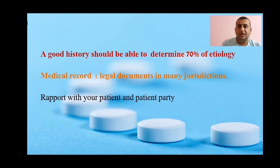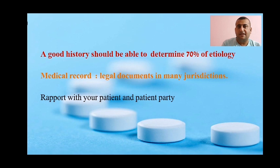If a patient has come to you who was staying away from home in a hostel or somewhere like that, their friends are the good informants rather than the first order relatives or siblings. It's important to understand that not always the first order relatives or siblings are the most important informants. The reliability of the informant has to be justified before taking history.